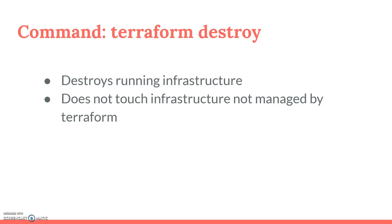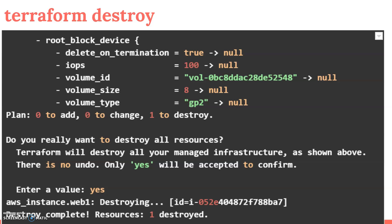Terraform destroy removes all infrastructure created by Terraform. Terraform will remove all resources which were created by Terraform, and it will not touch infrastructure that is not managed by Terraform. The destroy output will show which resource was destroyed — you can see at the end of the output that one resource is destroyed along with the instance ID being destroyed.